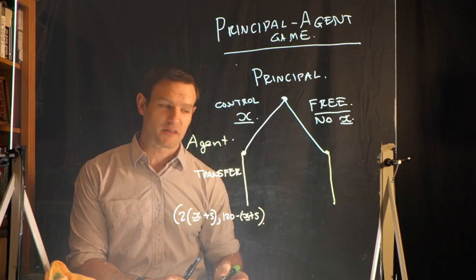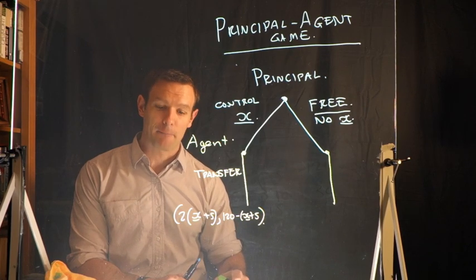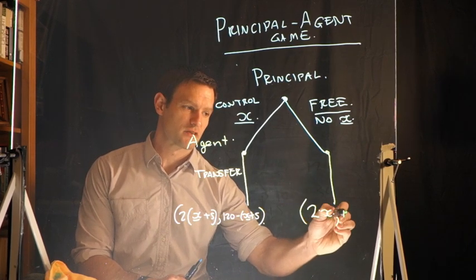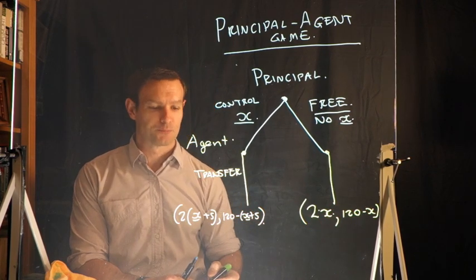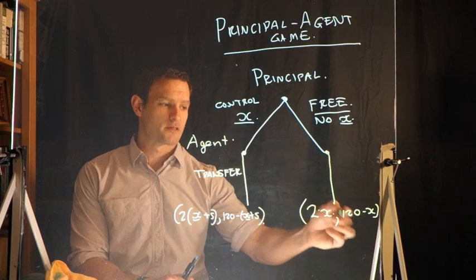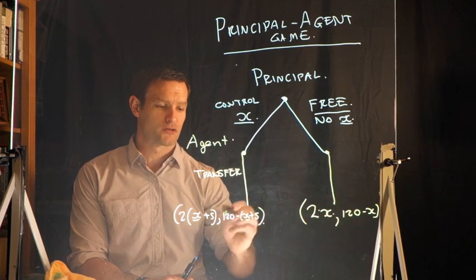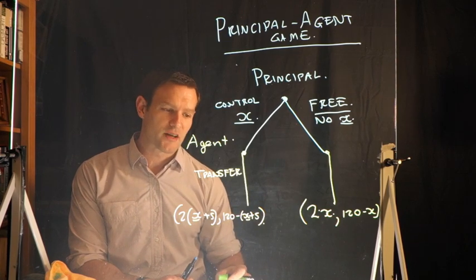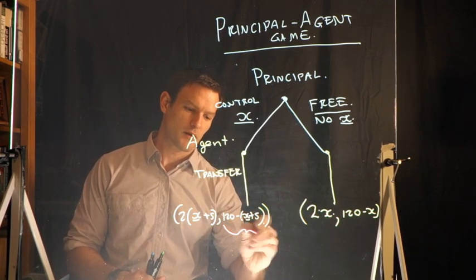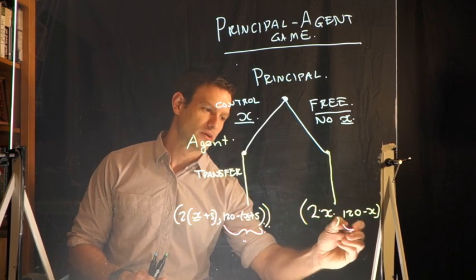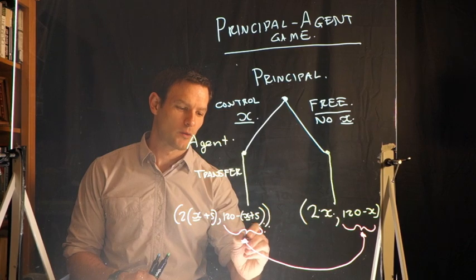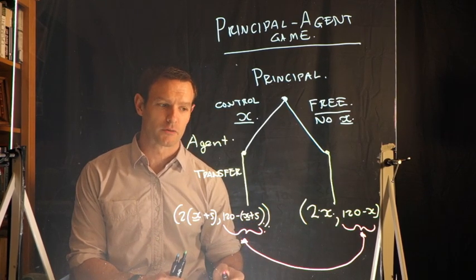If the principal leaves the agent free, there is no x-bar stipulated. The principal simply gets 2x — whatever is sent — and the agent is left with 120 minus x. Comparing these two branches, we want to understand whether the amount transferred when the agent is controlled differs from the amount transferred when the agent is left free. That comparison reveals the agent's response to being controlled.